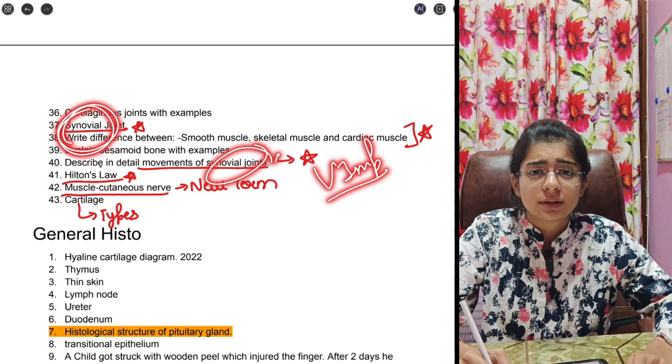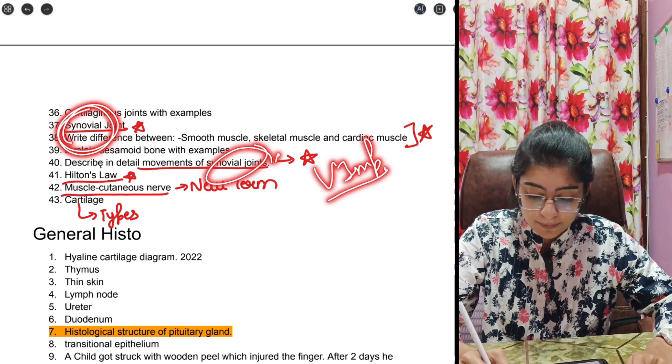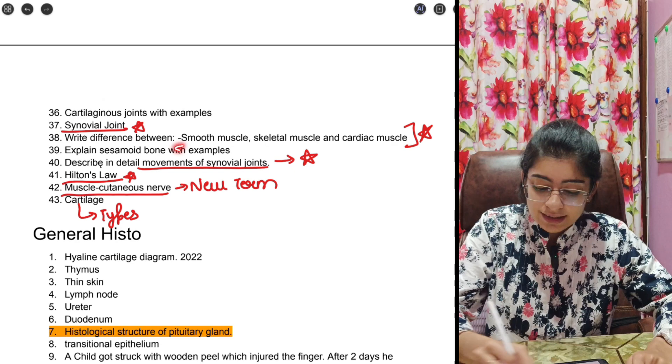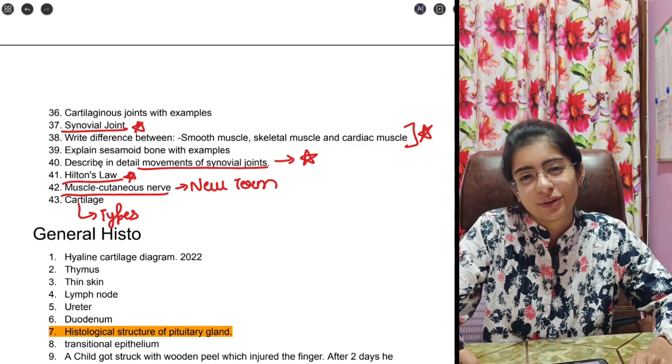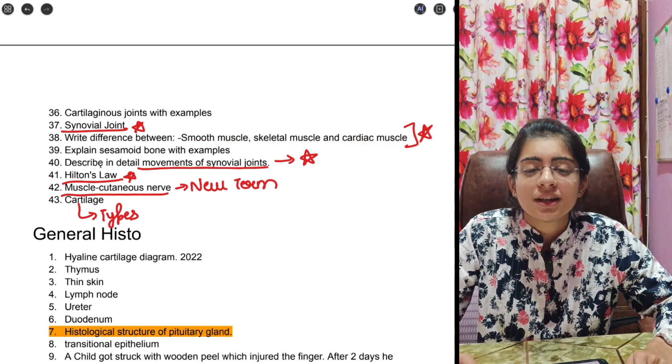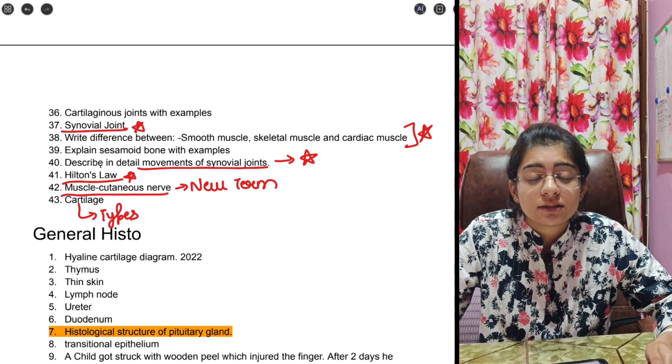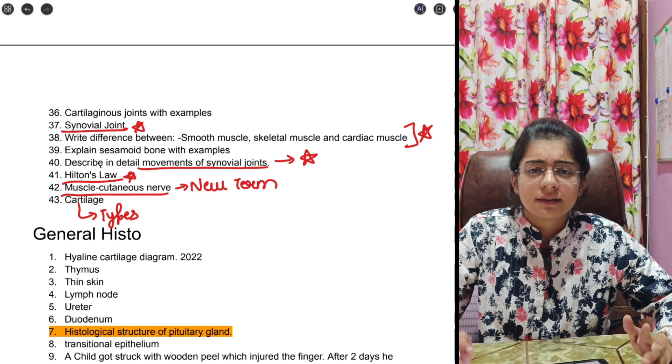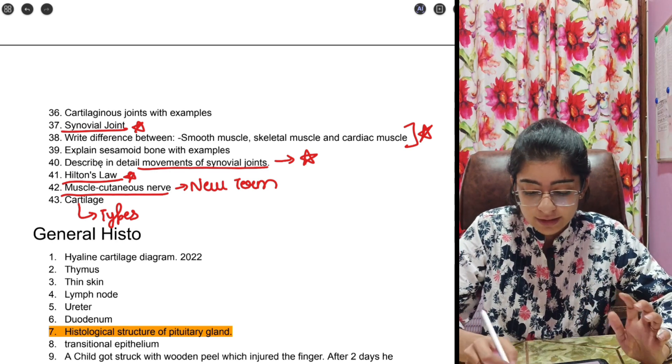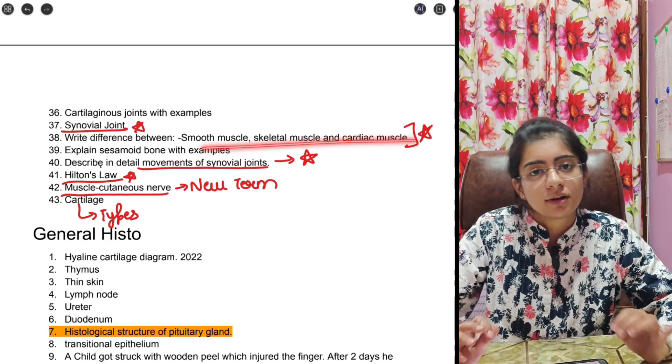Hilton's law is an important short question. Next, synovial joint is itself very important, just mind my words because I think it comes almost in every college. Next is difference between these three types of muscles, it is a standard question and we have done in NEET also. Just try to expand the knowledge.